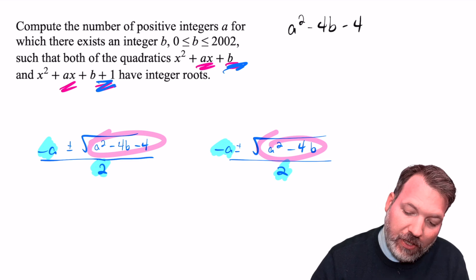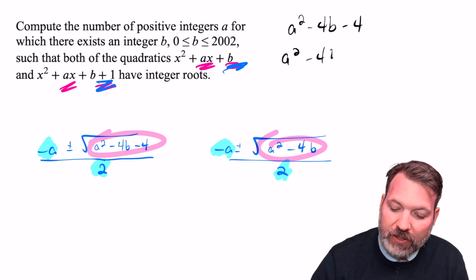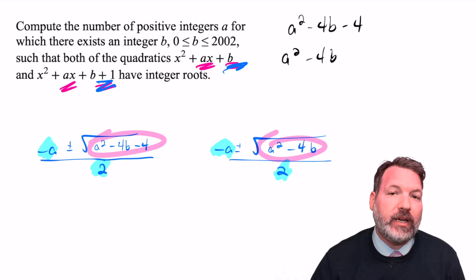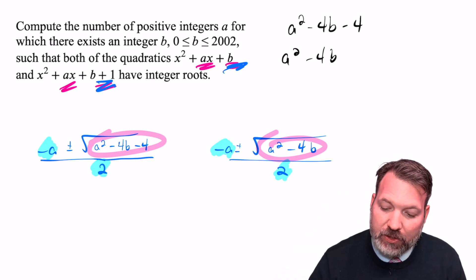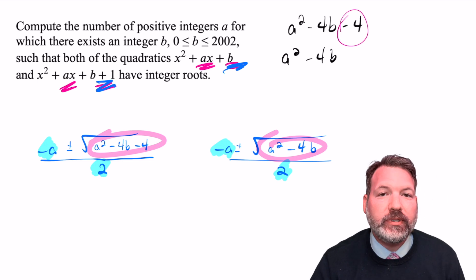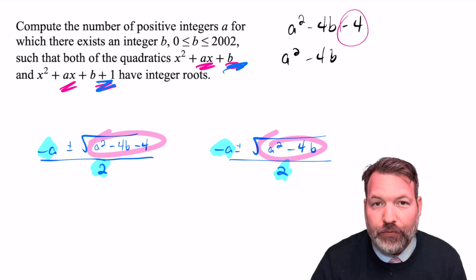But that's interesting because we can tell how far apart these are. These two numbers, whatever they are, we don't need to set equal to any particular perfect square to be able to see that the only difference between them is that minus 4.